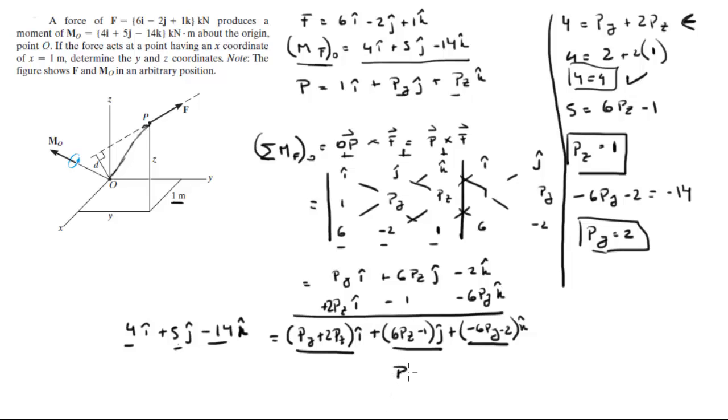In conclusion, P sits at 1 in the i, which was given originally, plus 2 in the j plus 1 in the k. Final answer for the coordinates of P. This is Pz, this is Py.